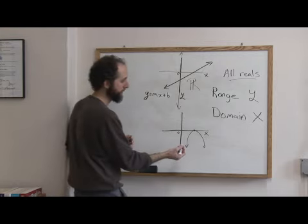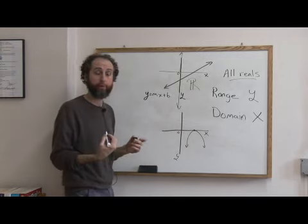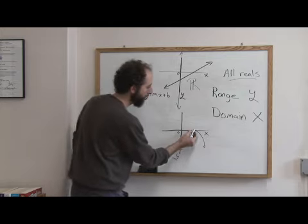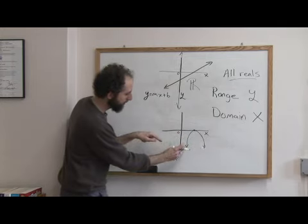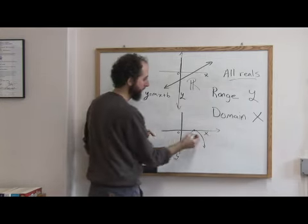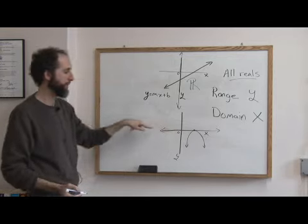Now for this, you gotta say what y values are covered here. Incidentally, the domain—the x values—we're gonna cover all x values here. Even though it looks like it slopes down, it's actually going that way. So eventually all x values this way and that way will be covered.